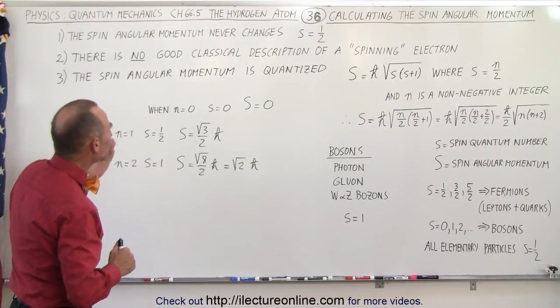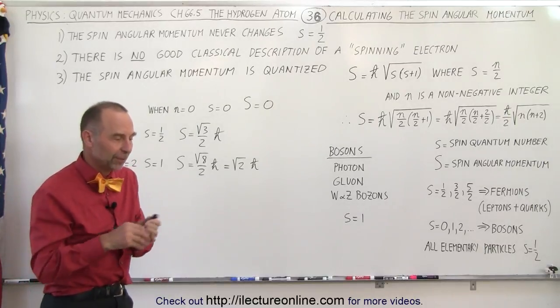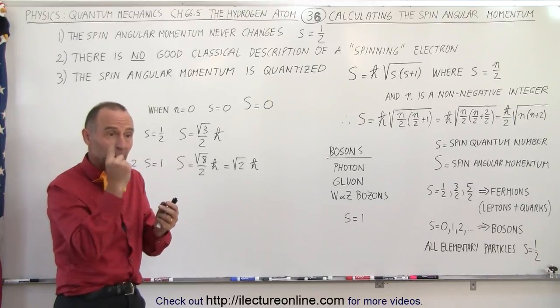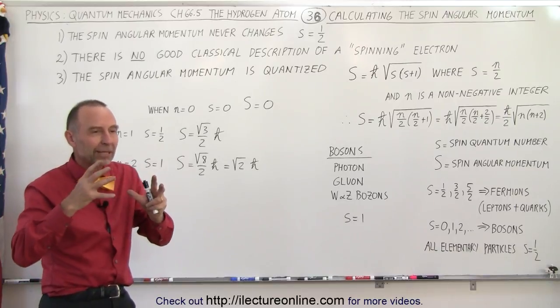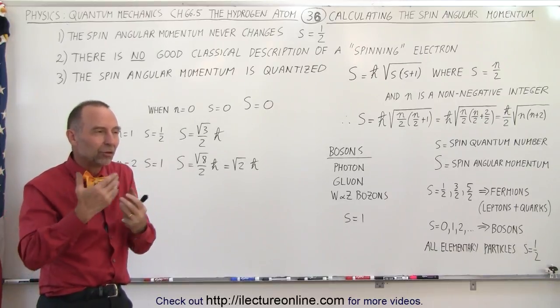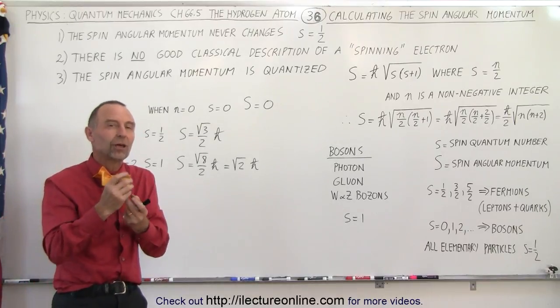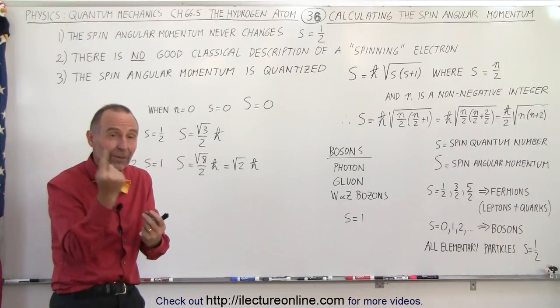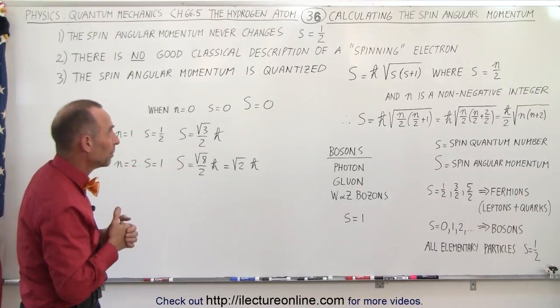Secondly there's no good classical description of a spinning electron and this is important because we like to think of it as an electron actually spinning on its axis like a baseball could be spinning on its axis but that's not the case. It is some property that we call the spin and it does contribute to the angular momentum that's why that word spin is used but it's not to be confused in the classical sense that it's actually something that's rotating on its axis. So we'll look at that a little bit more as well.